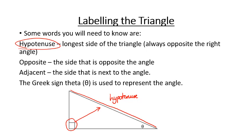The next thing you're going to need to know is theta — the Greek symbol used to represent angles. When we label a triangle with opposite or adjacent, that's in relation to where theta is, or to where the angle is that we're talking about. So we always label those unknown angles as theta.